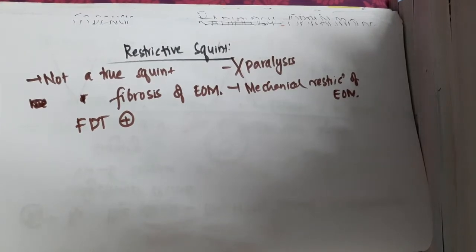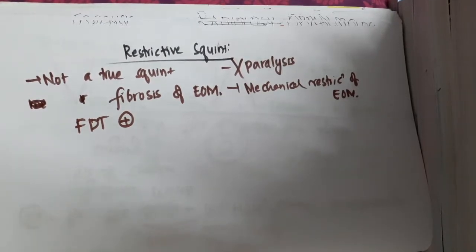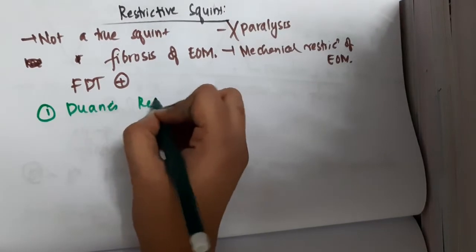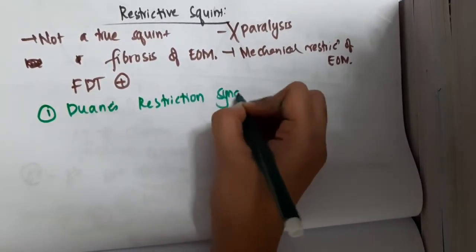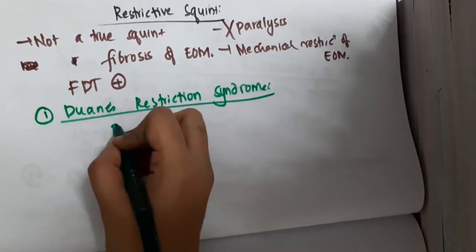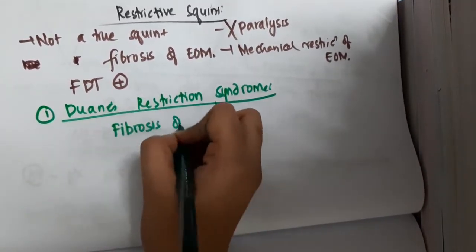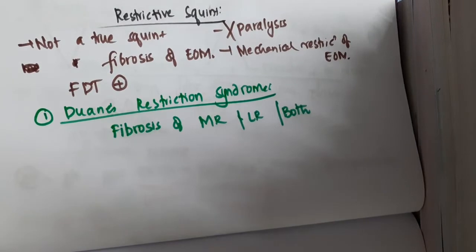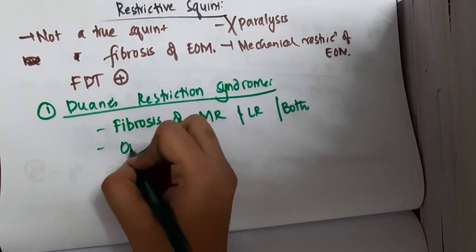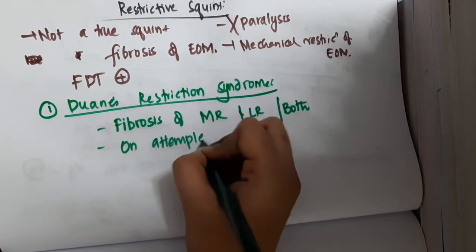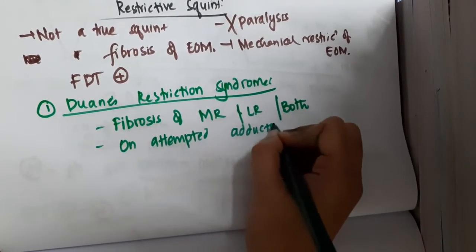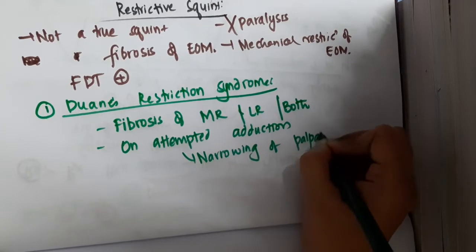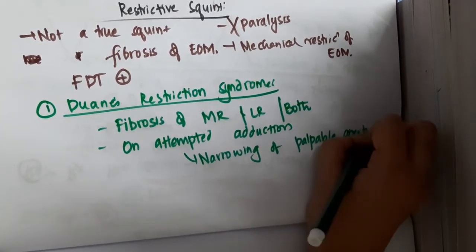There are different types of restrictive squint. The first type is Duane's restriction syndrome. In Duane's restriction syndrome, there is fibrosis of the medial rectus, lateral rectus, or both. On attempted adduction, there is narrowing of the palpebral aperture.